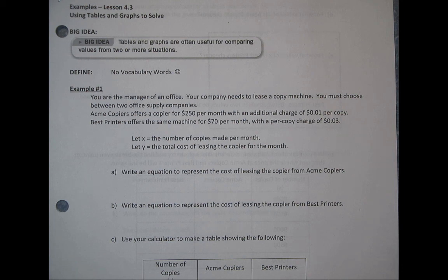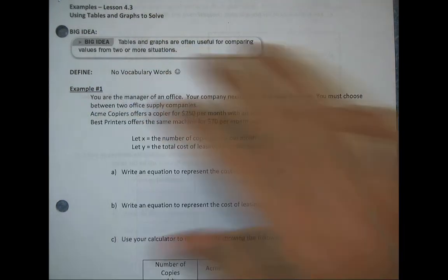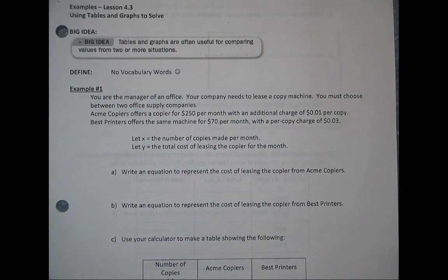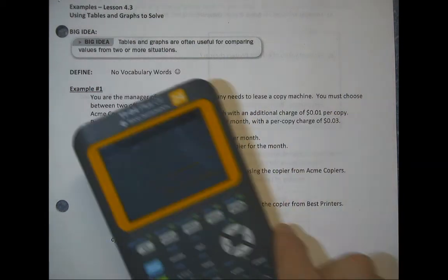Lesson 4.3 — we're going to use some tables and graphs to solve. Our big idea: tables and graphs are often useful for comparing values from two or more solutions. No vocabulary words today; we're going to jump right in. It's all going to be one problem, and we're going to look at different strategies for using tables and graphs, and we're going to be using our graphing calculator.